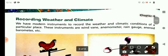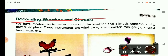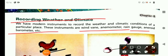Now let's read about the recording of weather and climate. We have modern instruments to record the weather and climatic conditions of a particular place. These instruments are wind vane, anemometer, rain gauge, aneroid barometer, etc.